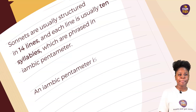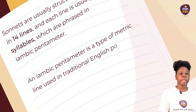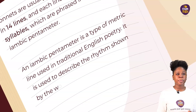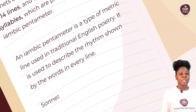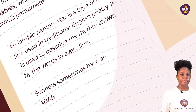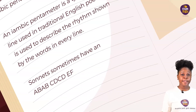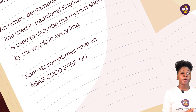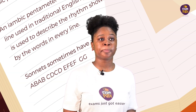An iambic pentameter is a type of metric line used in traditional English poetry. It is used to describe the rhythm shown by the words in every line. Sonnets sometimes have an A-B-A-B-C-D-C-D-E-F-E-F-G-G rhyme scheme, but it's not compulsory to implement that in your writing.